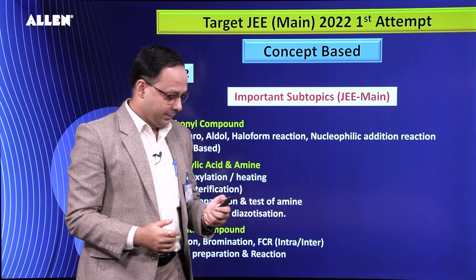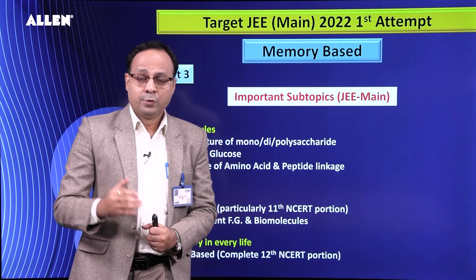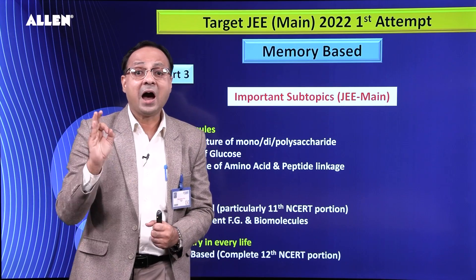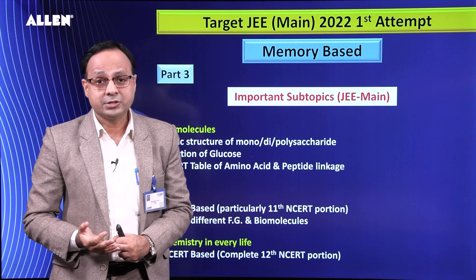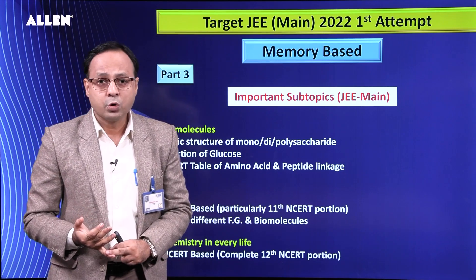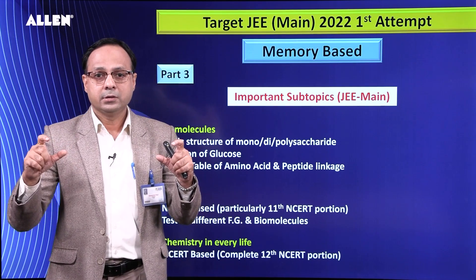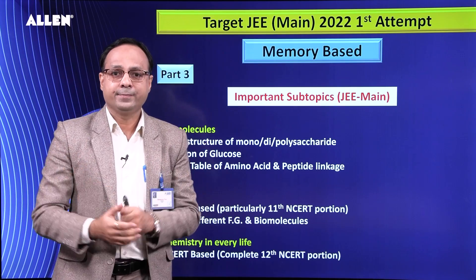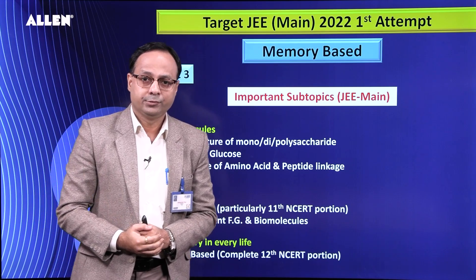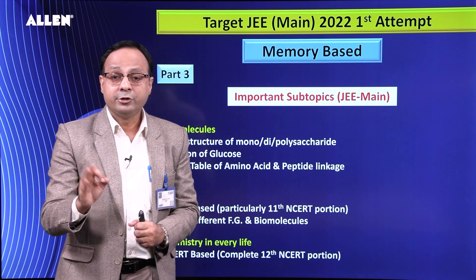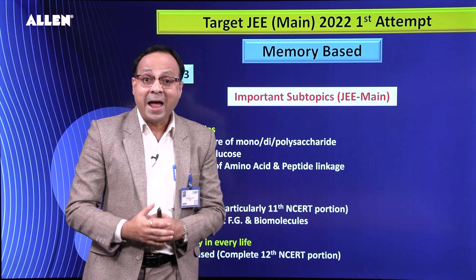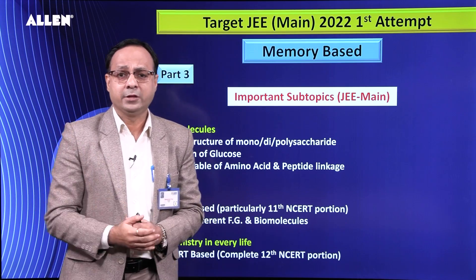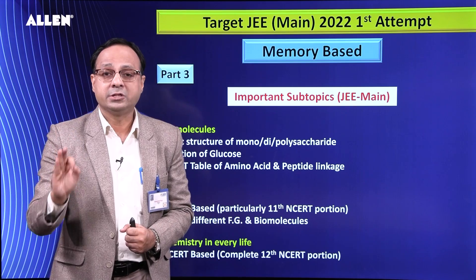Next, Part 3 — biomolecules. From carbohydrates, every detailed information from NCERT is equally important: disaccharide structure, polysaccharide structure, reactions of glucose, structure of monosaccharides — NCERT se ek ek point padh ke jaiye. NCERT for amino acids is very important — particularly the table where different types of amino acid structures, number of functional groups, chiral centers, and every small detail are given. Wo sare Mains paper mein bahut zyada important hain.